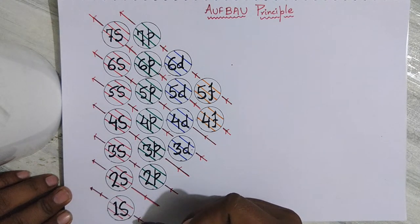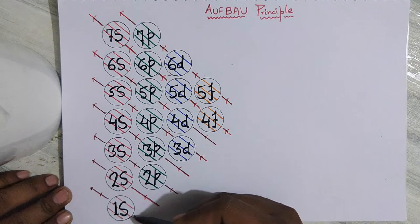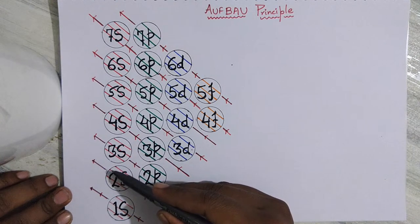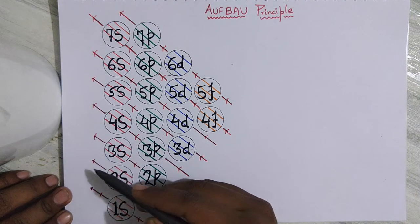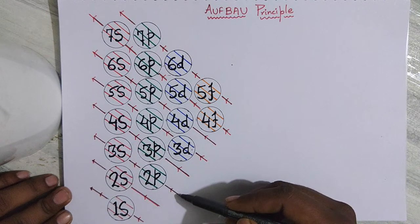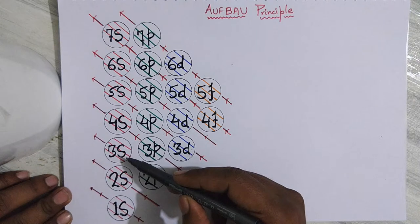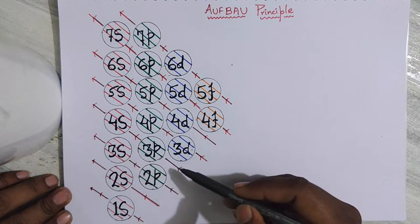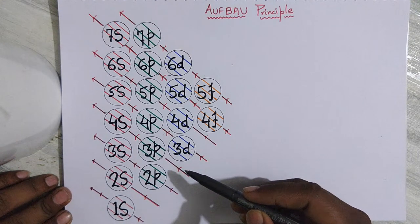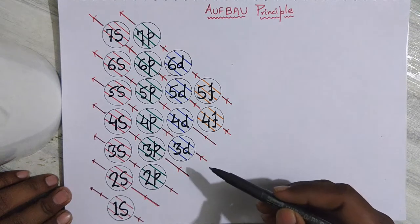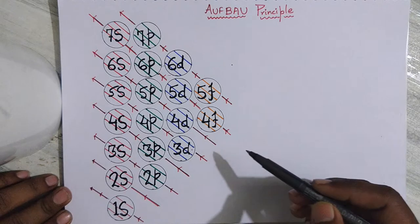According to the Aufbau principle, whenever you are going to fill the electrons in the orbital, you fill the 1s orbital first. Then go back to the initial point and fill the 2s orbital. Since there are no orbitals ahead of 2s, go back and fill the 2p orbital, then move ahead to 3s. You keep doing this until all the electrons are filled in their respective orbitals.